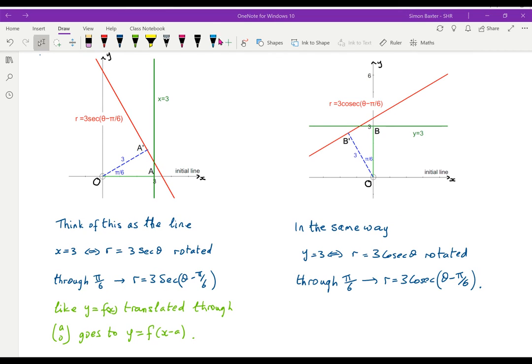In the same way, we can think of the equation r equals 3 cosec theta minus pi by 6. As starting with the line y equals 3. y equals 3 is the line y equals 3 cosec theta, which we did just now. Now, if we rotate that through pi by 6, it becomes r equals 3 cosec theta minus pi by 6. Green line rotated about the origin through pi by 6.